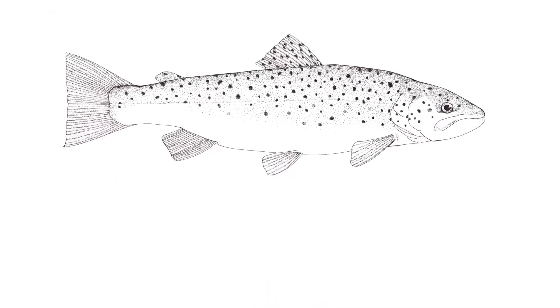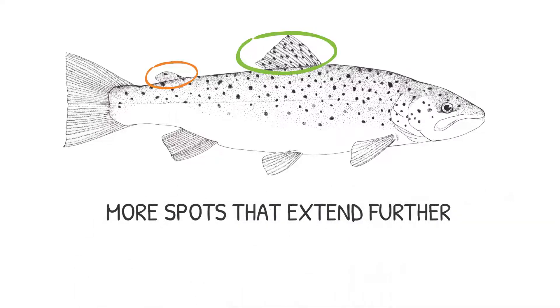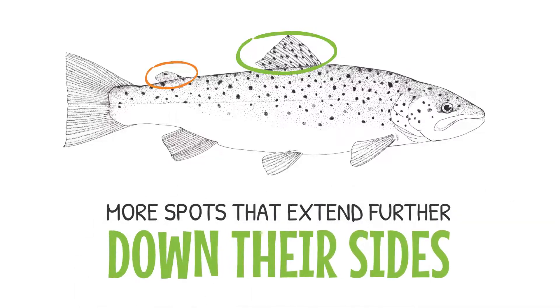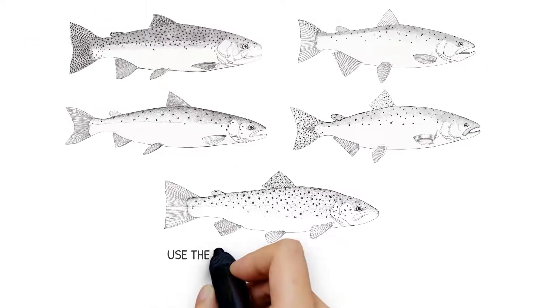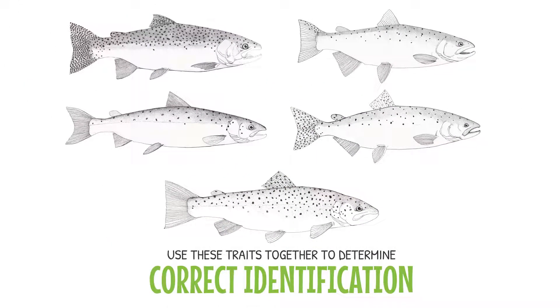Brown trout also may have spots on their dorsal fin, orange in their adipose fin, and more spots that extend further down their sides. Use these traits together to determine correct identification of these similar species.